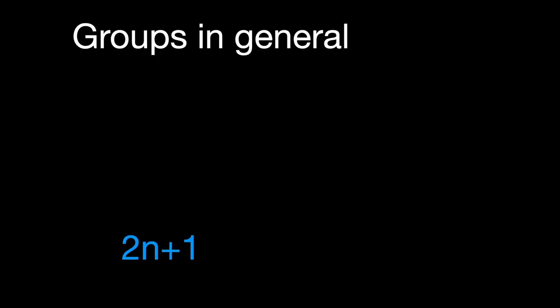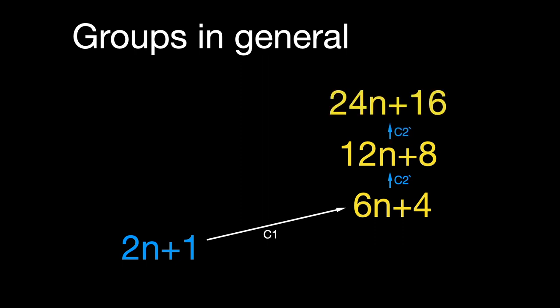So for the general case, beginning with any odd number 2n plus 1, we use the rule C1 to create 6n plus 4. Now we apply C2 inverted once to get 12n plus 8, and one more time to get 24n plus 16. Then, inverting rule C1, we complete the group with 8n plus 5.